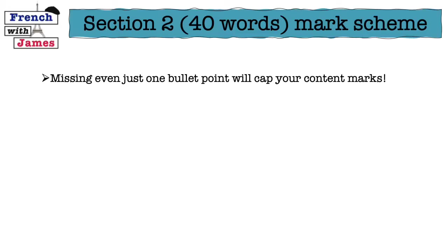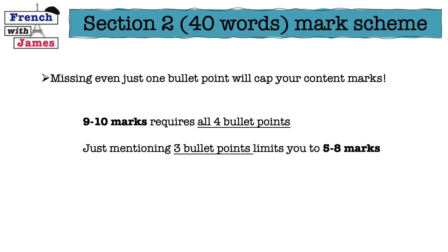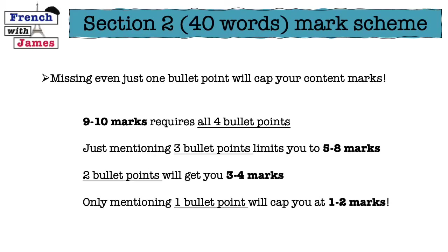Missing even just one bullet point will cap your content marks, even if the rest of your writing is fantastic. To get 9 or 10 marks out of 10 you need all four bullet points. Mentioning only three limits you to a maximum of 8; only two bullet points caps you at 4; and mentioning just one bullet point will get you somewhere between one and two marks out of 10 for content.